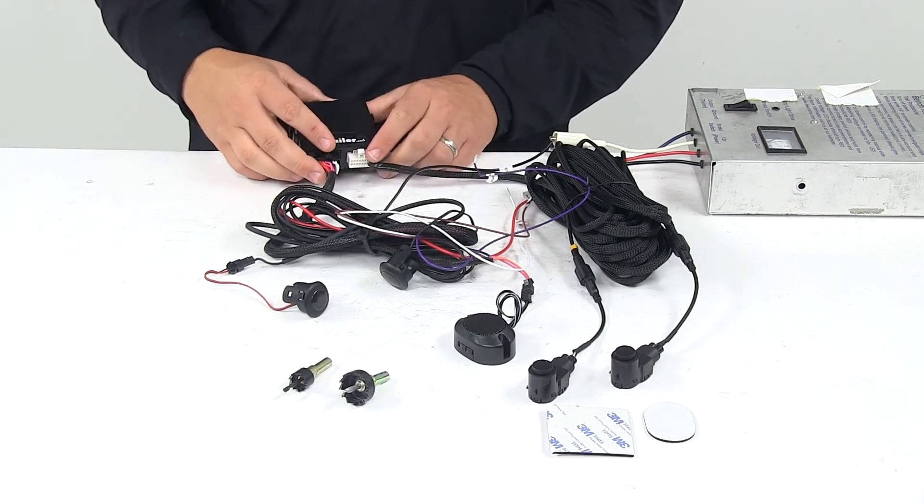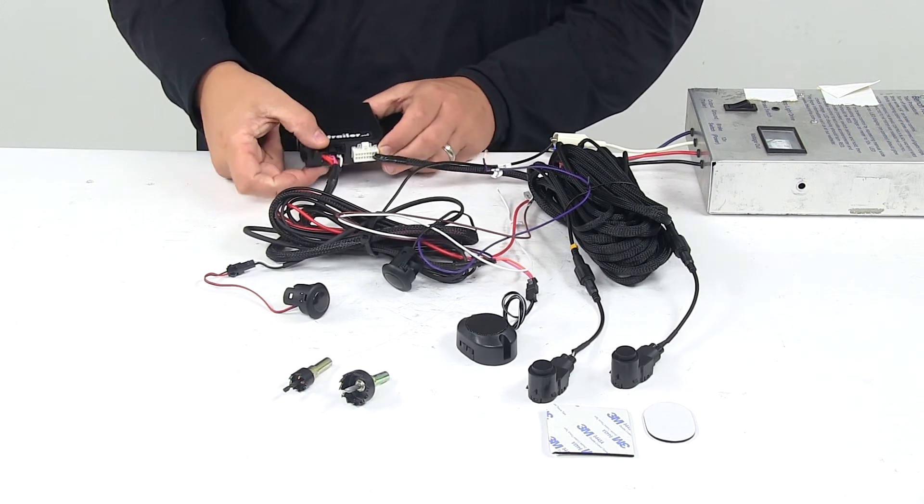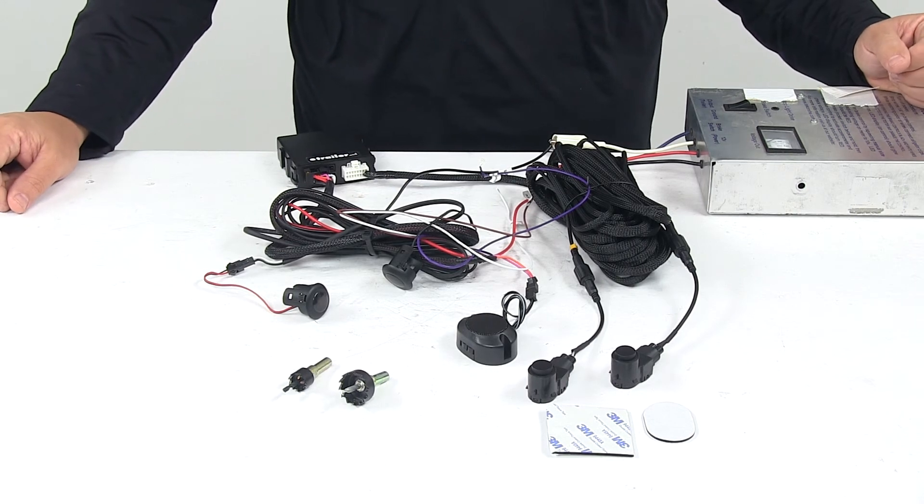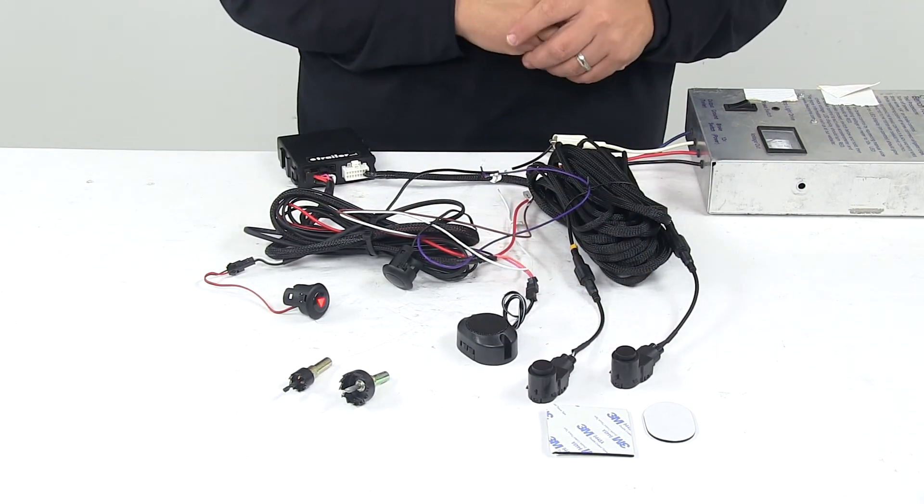It is designed for 12 volt applications. The control module measures three inches by three inches by one inch. This system is designed to work on vehicles up to 26 feet long. The sensors feature a nice waterproof design.